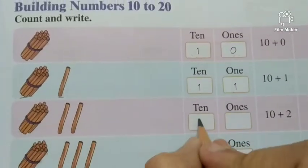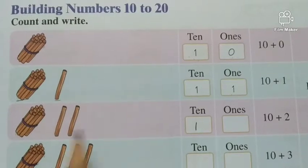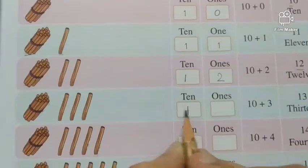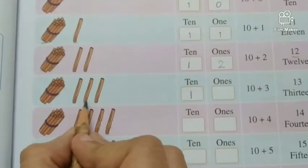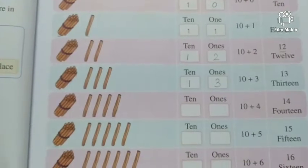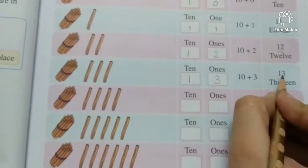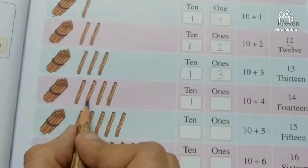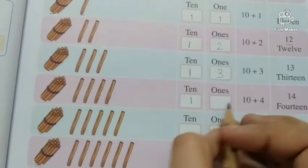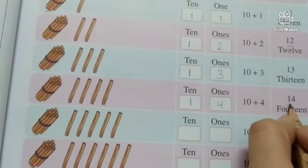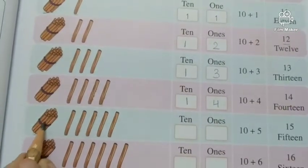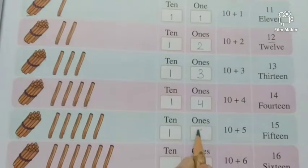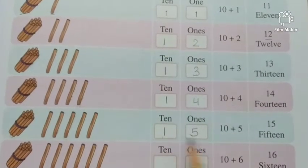Next, 1 tenth and how many ones? 1, 2, 12. Next, 1 tenth and how many ones? 1, 2, 3. 3 ones. 1, 3, 13. Next, 1 tenth and how many ones? 1, 2, 3, 4. 4 ones. 1, 4, 14. Next, 1 tenth and 1 one, 2, 3, 4, 5. 5 ones. 1, 5, 15.